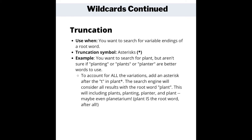For example, let's say you want to look up plants, but you aren't sure if planting is a better word, or maybe planter. By adding the asterisk after the T in plant, the search engine will show all results with the root word plant and consider plants, planting, planter, and plant — maybe even planetarium. Plant is the root word after all.